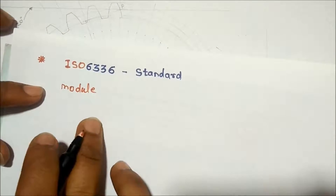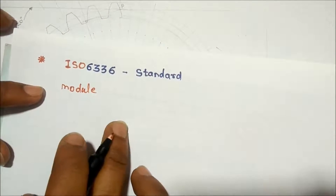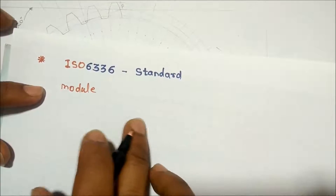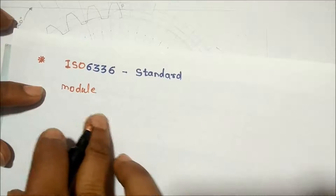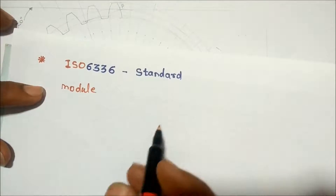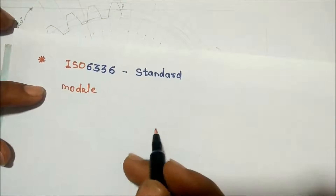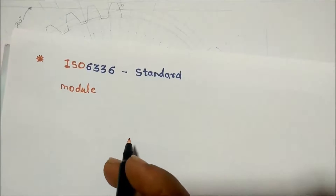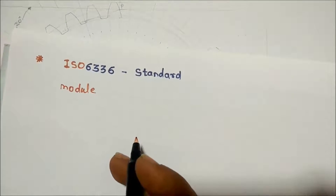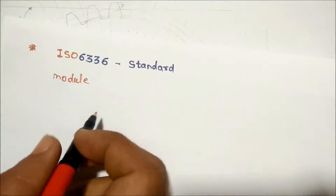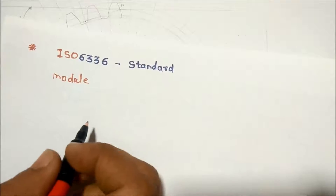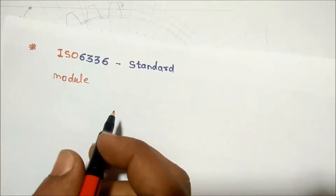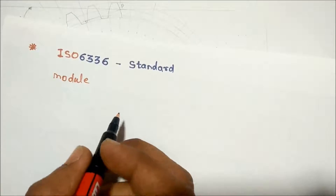The module is an important parameter in gearing. The size of the gear teeth depends on the module — if the module is smaller, the size of teeth is also smaller, and if the module is bigger, the size of teeth is also bigger. The module is defined as the pitch diameter in millimeters divided by the number of teeth.